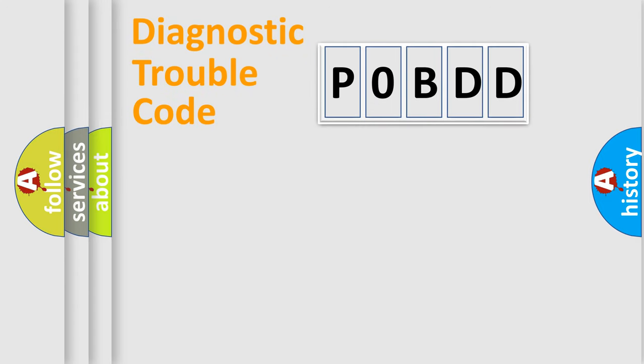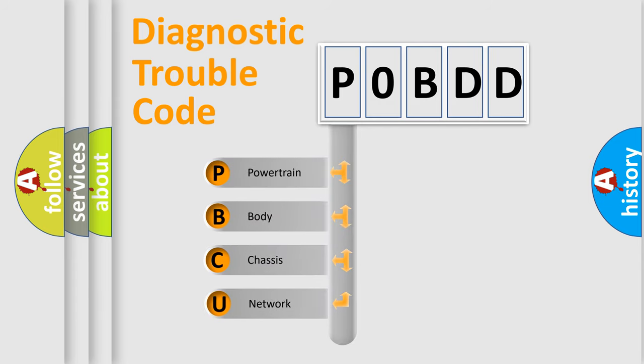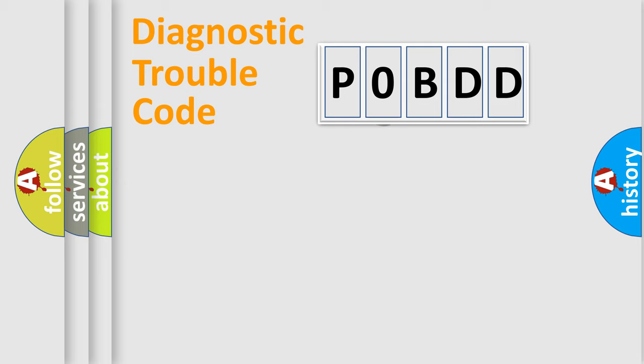First, let's look at the history of diagnostic fault code composition according to the OBD2 protocol, which is unified for all automakers since 2000. We divide the electric system of automobiles into four basic units: Powertrain, Body, Chassis, and Network. This distribution is defined in the first character code.